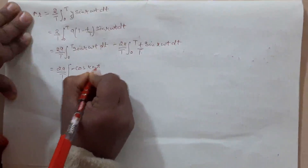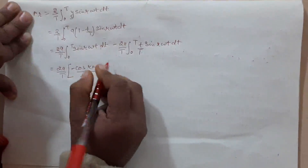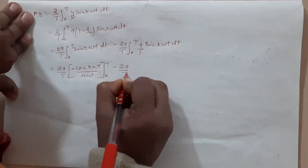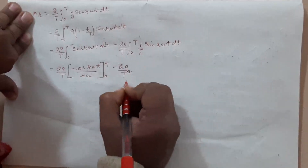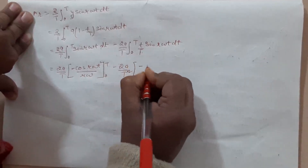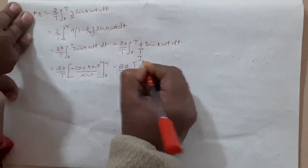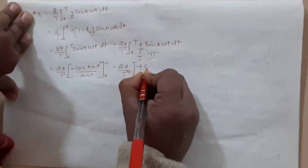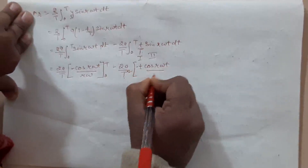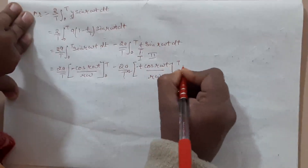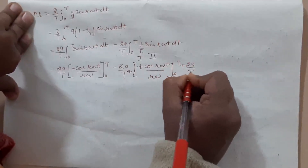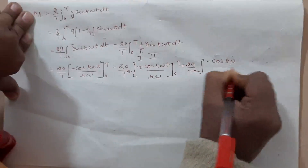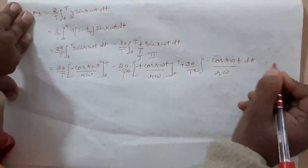Minus cos(rωt) upon rω, then minus 2a by t squared polynomial. First we'll use this for the first term and for the second term, then it is equal to minus t·cos(rωt)/rω, then 2a by t squared minus cos(rω)/rω dt.